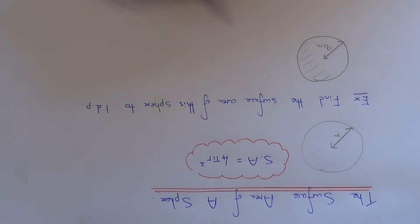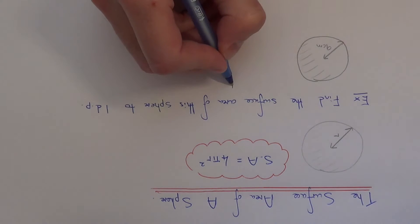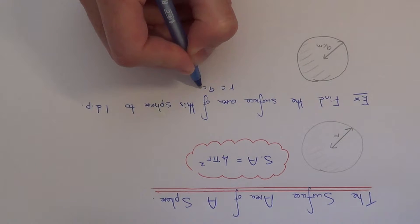So let's have a look at the example which I have here. We've got to find the surface area of the sphere to one decimal place. So we have a radius of 9 centimetres.